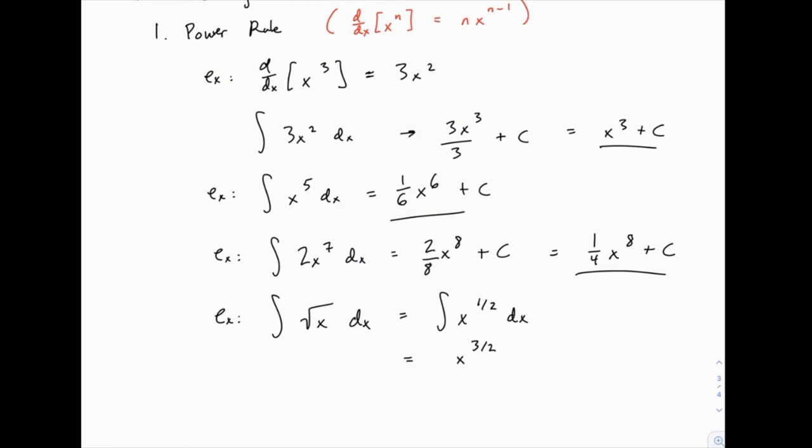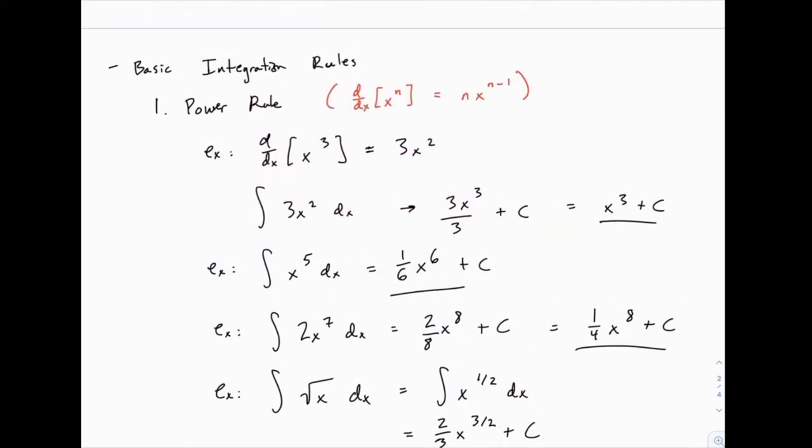And then we would divide by three-halves. Now rather than writing x to the three-halves divided by three-halves, what you'll often see is that we multiply by two-thirds. You just need to remember that when you divide by a fraction, it's the same thing as multiplying by the reciprocal. So our general power rule here says that the integral of x to the n would be one over n plus one times x to the n plus one plus C at the end.